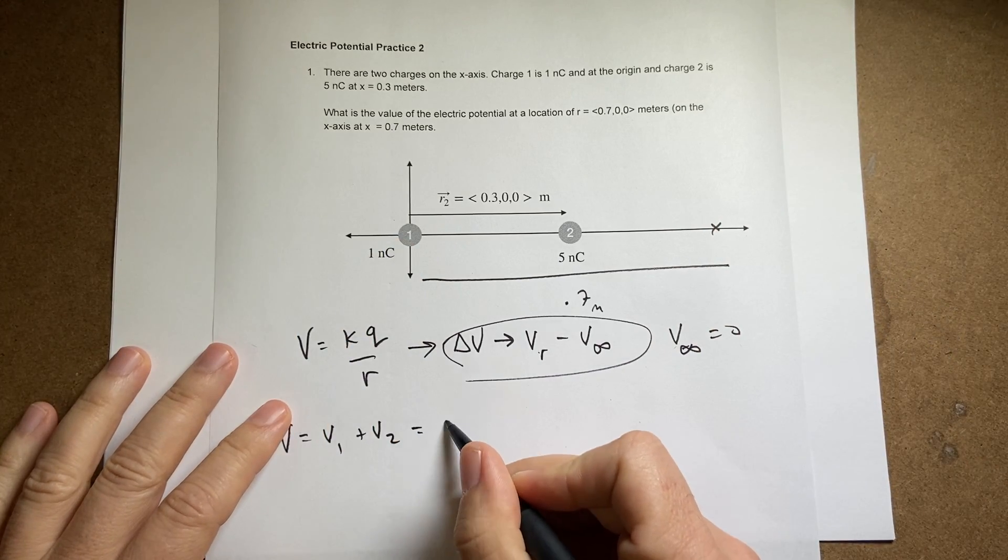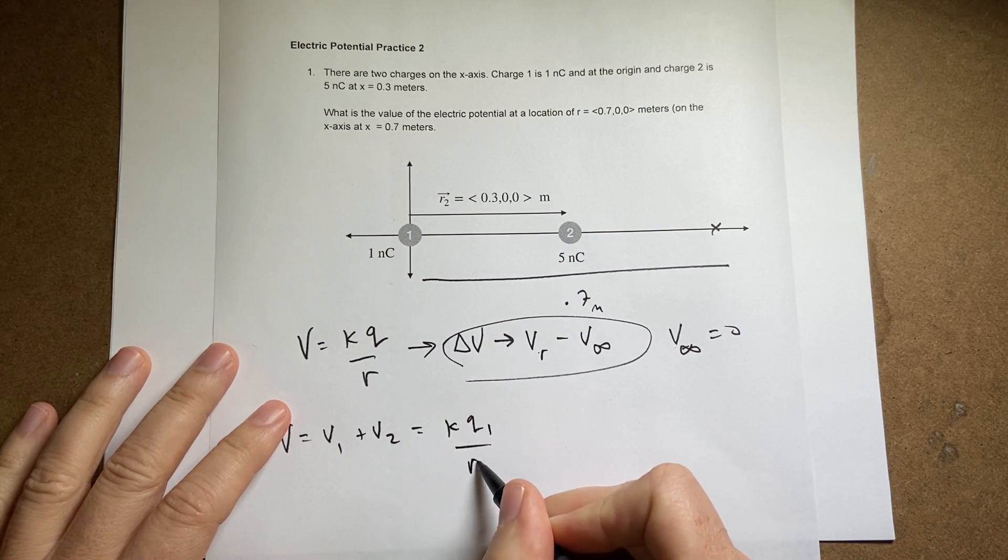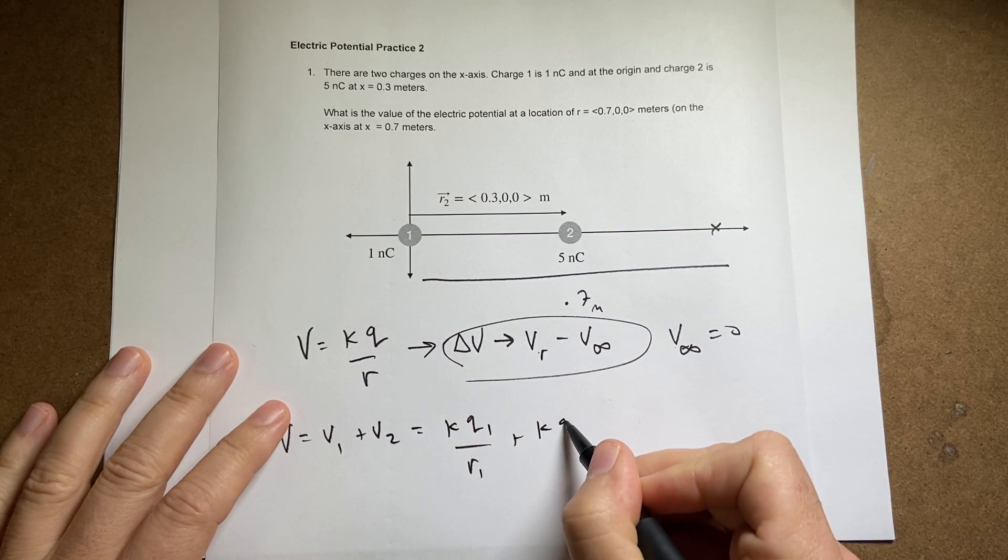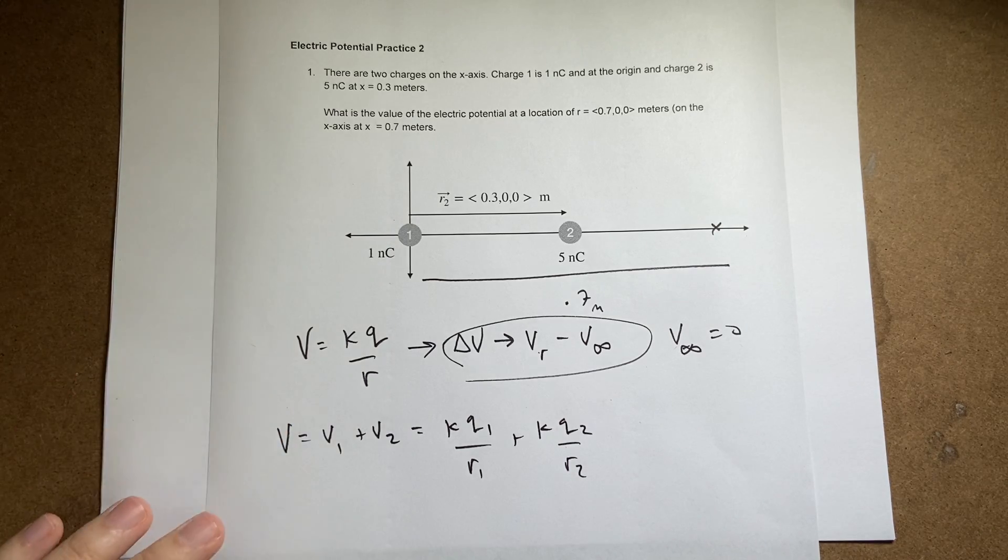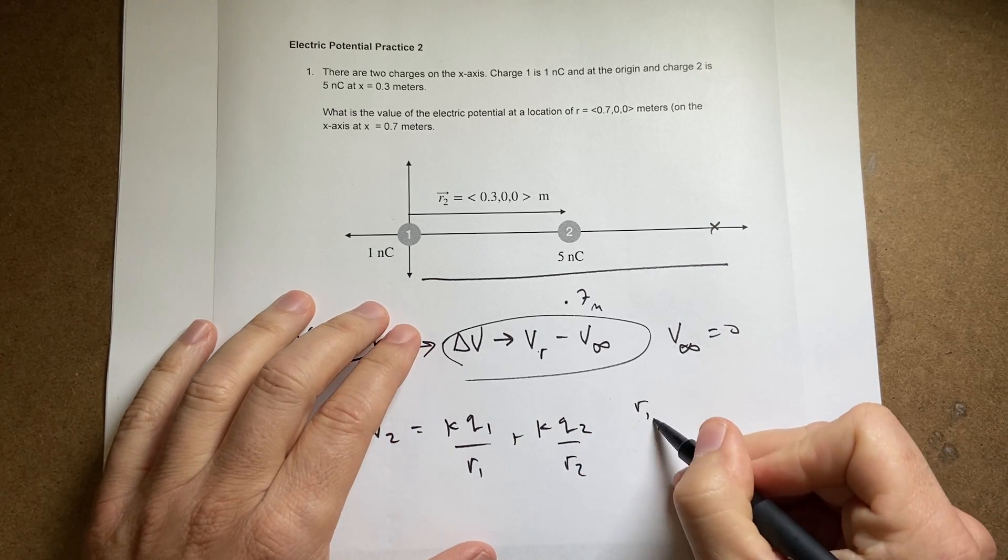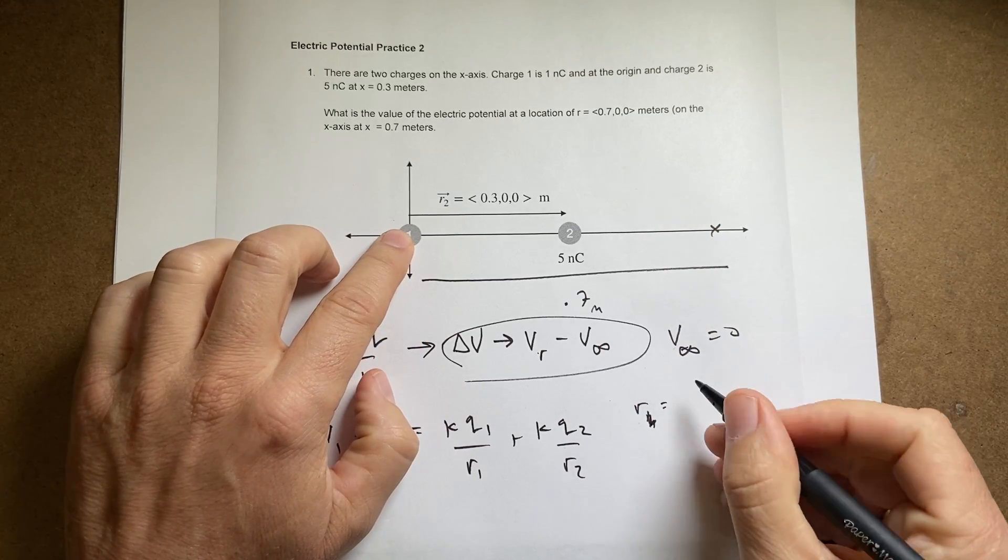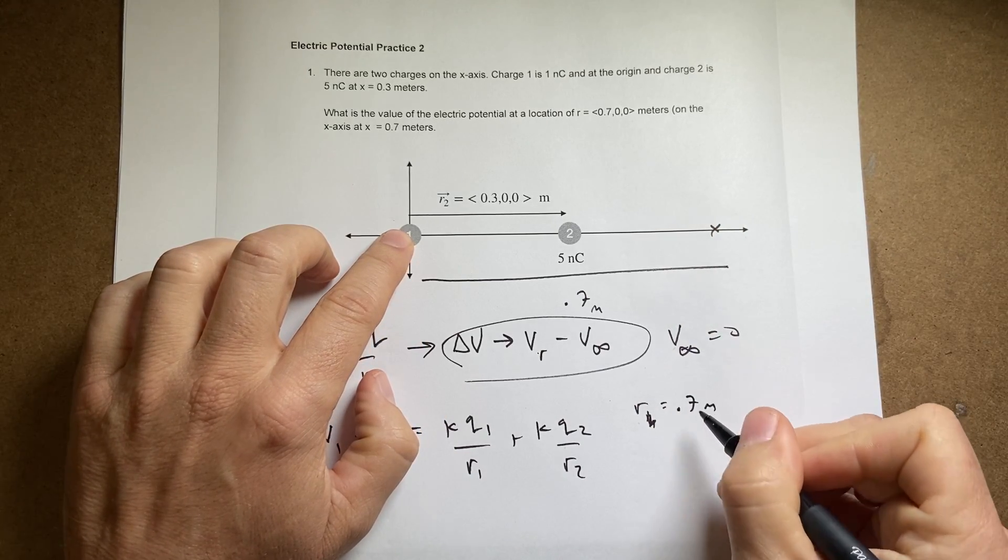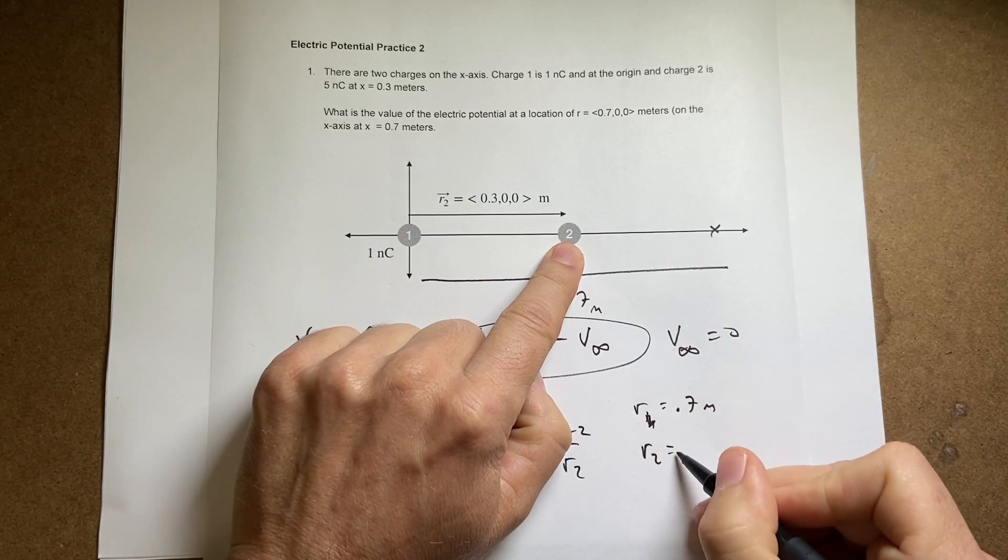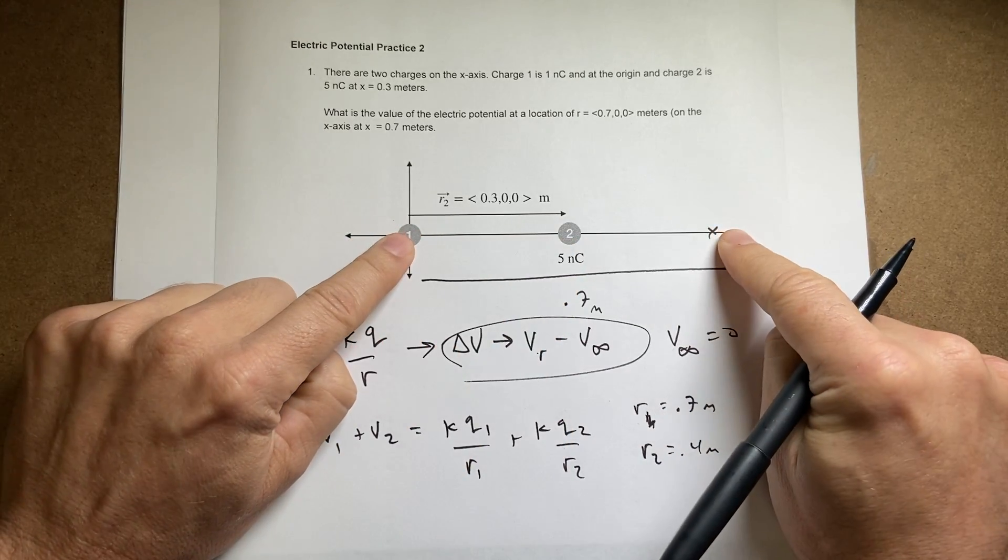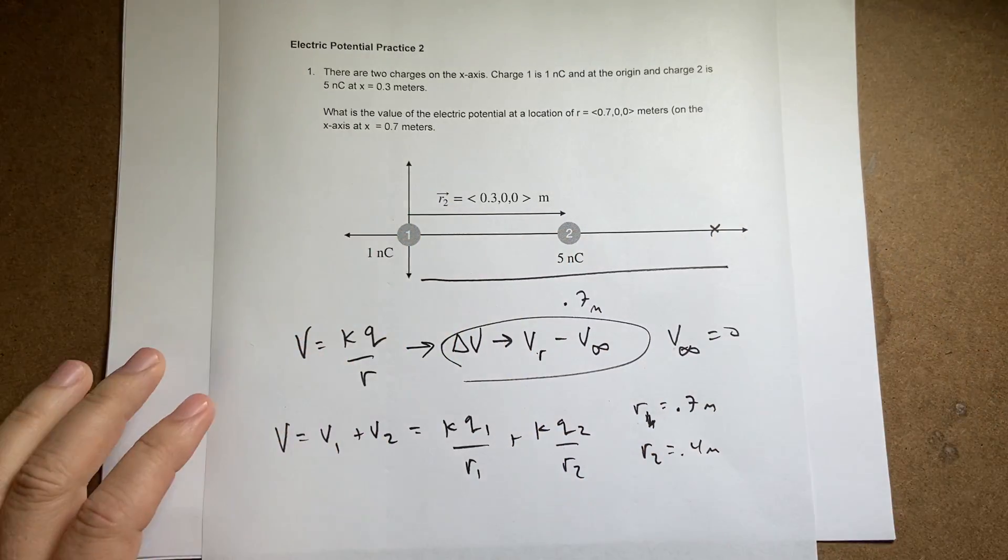If you're given the vector position, you need to find the magnitude of the distance between those and that's fine. So I can write this as k q_1 over r_1 plus k q_2 over r_2. So that's not so bad, right? Because I know r_1, r_1 is this distance, so that's going to be 0.7 meters. r_2 is this distance, that's going to be 0.4 meters, right? Because that's 0.7, that's 0.3, so this would be 0.4 meters.